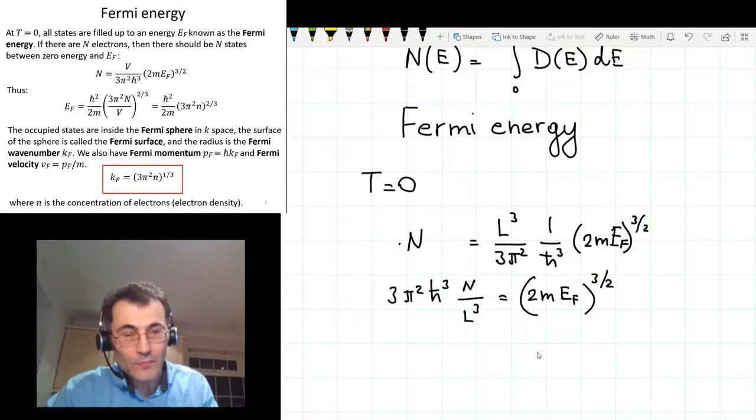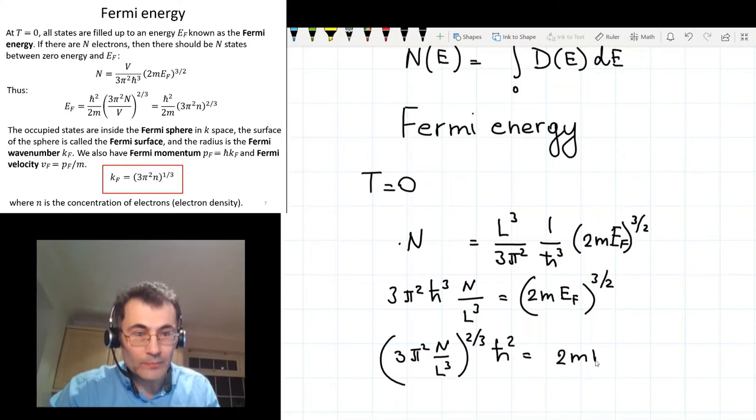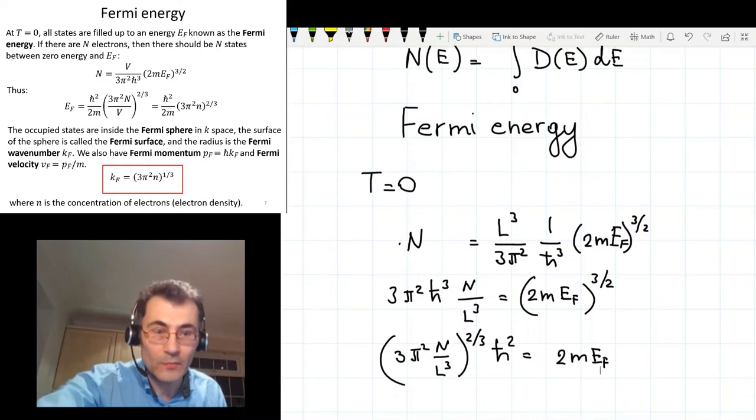Okay, now I take both parts of this equation to the power 2 thirds. And this will give me 3π² N divided by L³ to the power 2 thirds. ℏ³ to the power 3 halves will simply be ℏ². And this will be 2m E_Fermi.